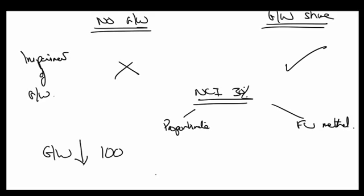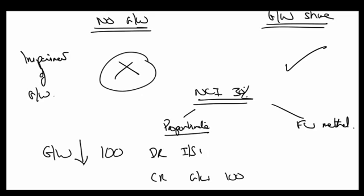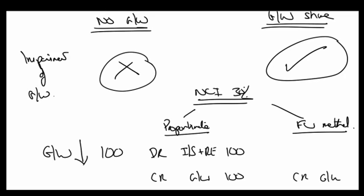If goodwill has gone down by 100, we would credit goodwill with 100 and we would debit, if it's doing the proportionate, NCI doesn't get any. So it all goes to me, it all goes to income statement and therefore retained earnings, all 100. If I was doing the fair value method, they do get their share. So they do get their share of goodwill. So they do get their share of any goodwill impaired. So debit NCI with 30% of 100, which is 30, and then debit the income statement and retained earnings with my share of 70.